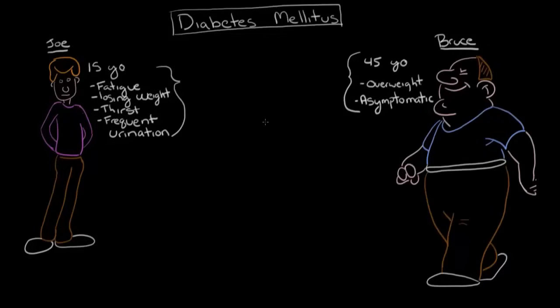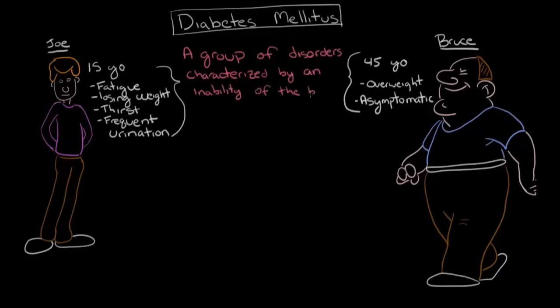To answer this question, we first need to understand what exactly diabetes is. I've been referring to diabetes mellitus, and generally when people refer to diabetes, they're referring to the disease diabetes mellitus. Diabetes mellitus is a group of disorders that are characterized by an inability of the body to regulate its blood sugar levels. Glucose is the main type of sugar that the body uses, and this dysregulation results in high blood sugar, or hyperglycemia.